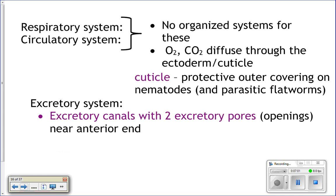Their respiratory and circulatory systems — they don't have them. They don't have an organized system for respiration to get oxygen, and they do not have an organized system for circulation either. They can simply rely on diffusion. Oxygen will diffuse through their ectoderm in, and carbon dioxide will diffuse out. They are small enough and thin enough that they can rely on diffusion and don't need a circulatory system to transport anything around.